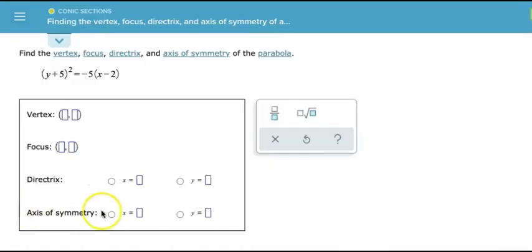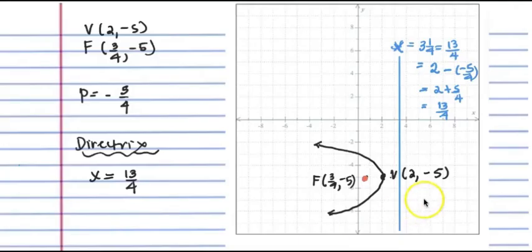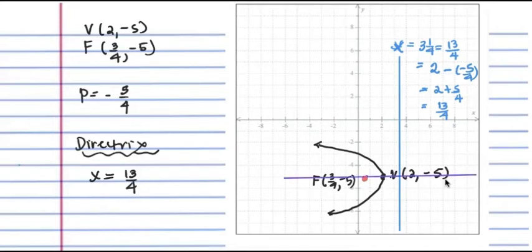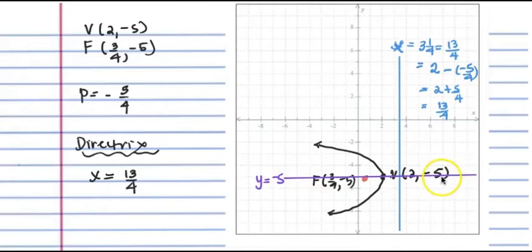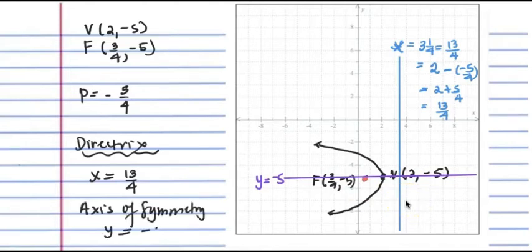The last step is to find the axis of symmetry. Since it's a horizontal parabola, the axis of symmetry will be horizontal — a horizontal line through negative 5. So the axis of symmetry is y equal to negative 5. We used the y value of the vertex, just as we used the x value plus p and minus p to get the focus and directrix.